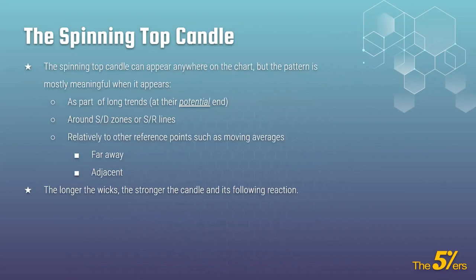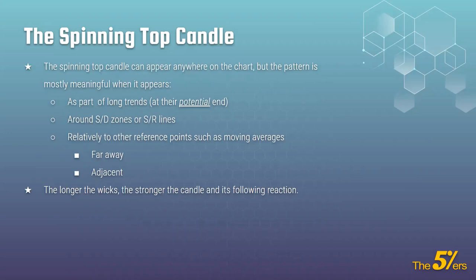The spinning top candle can appear anywhere on the chart and on any time frame, but the pattern is mostly meaningful when it appears as part of long trends — at their potential end. When the trend is there and you see very strong momentum with big candles, and then this candle appears, it usually has a very significant meaning. So don't look at this candle just anywhere — look for it after long trends, or around supply and demand zones, support and resistance lines, and also moving averages, which I've added as reference points here.